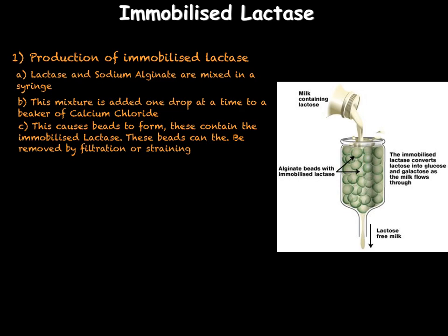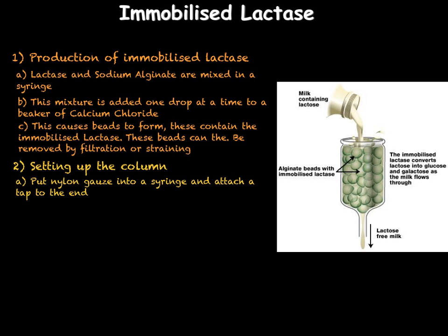Secondly, we need to set up our column. To do this we put a small piece of nylon gauze in the syringe and attach a tap to the end — the gauze prevents the beads from running through. We then put our beads into the column. We are now ready to make our lactose free milk.